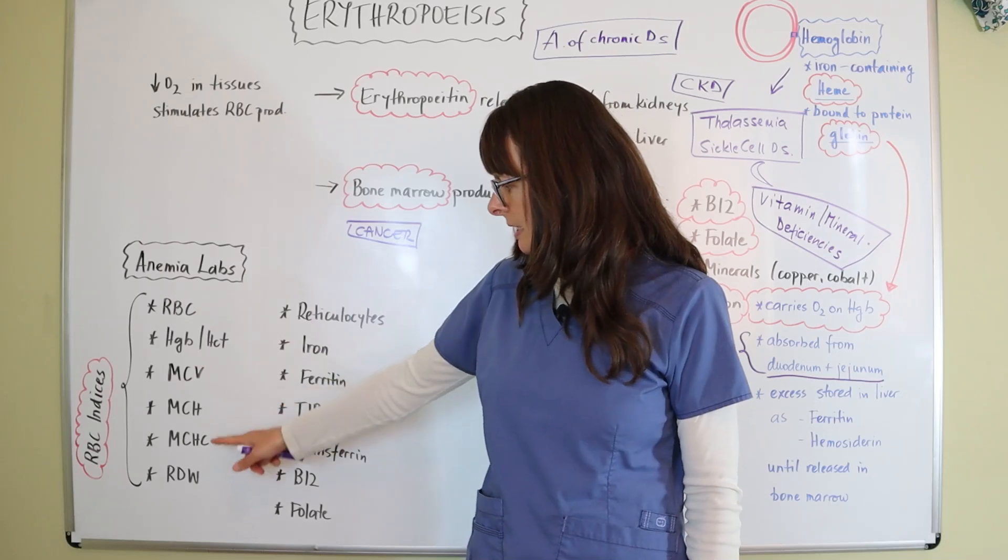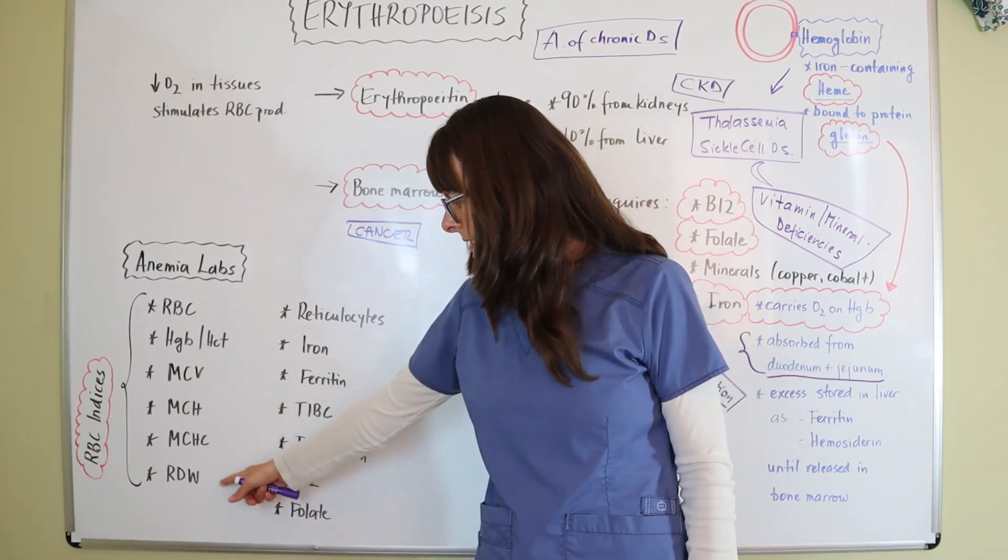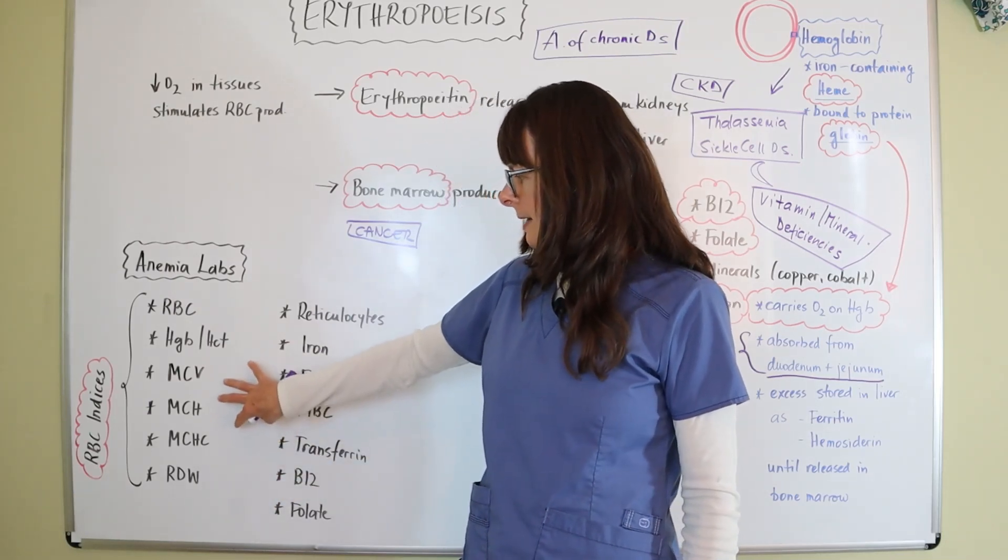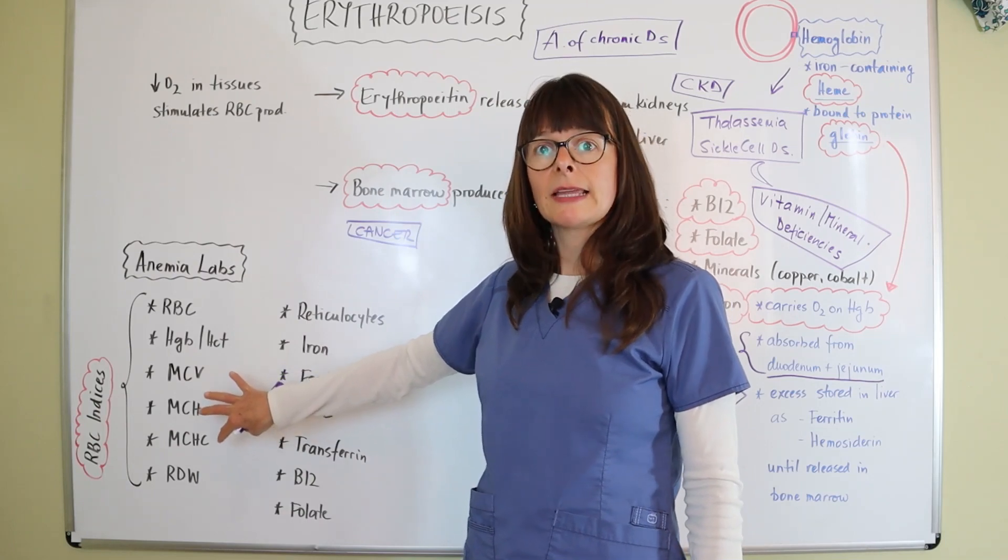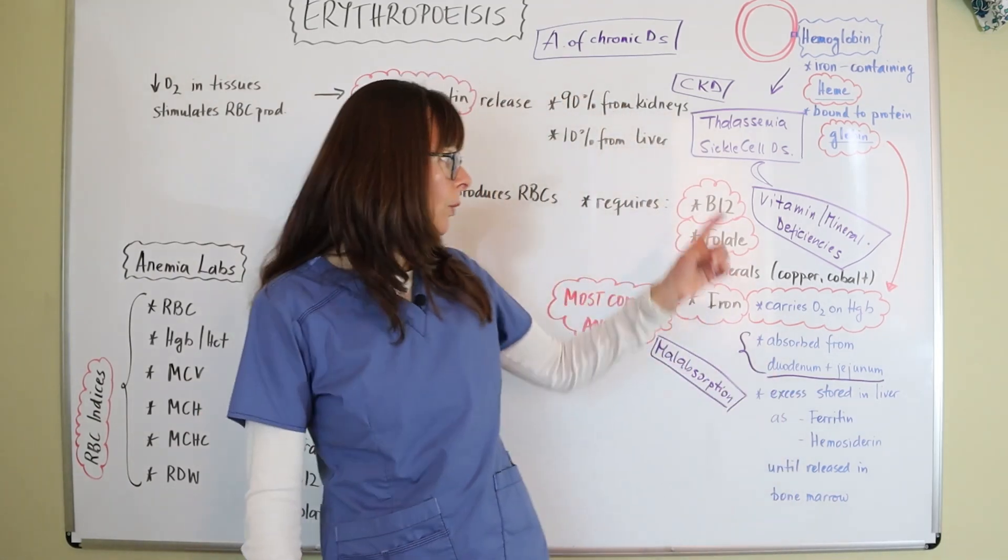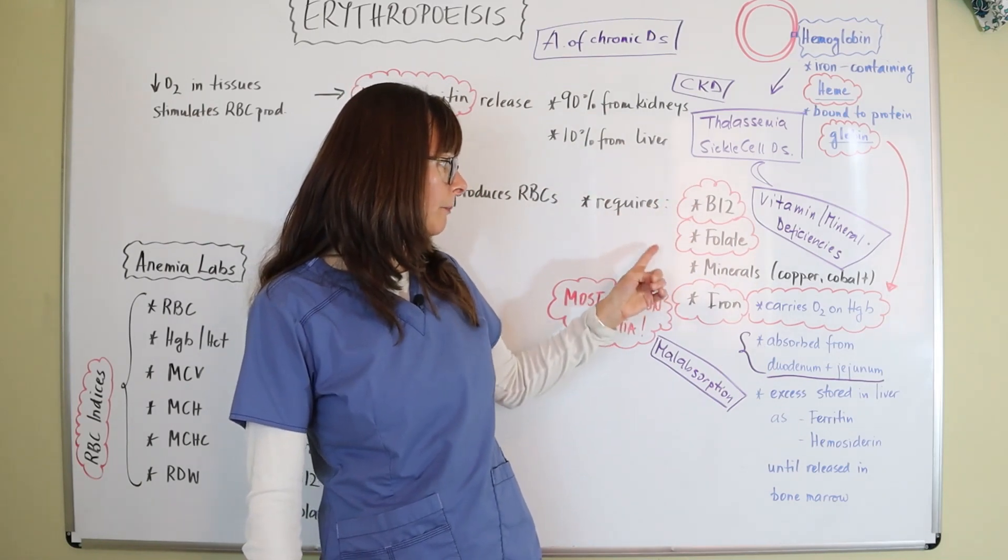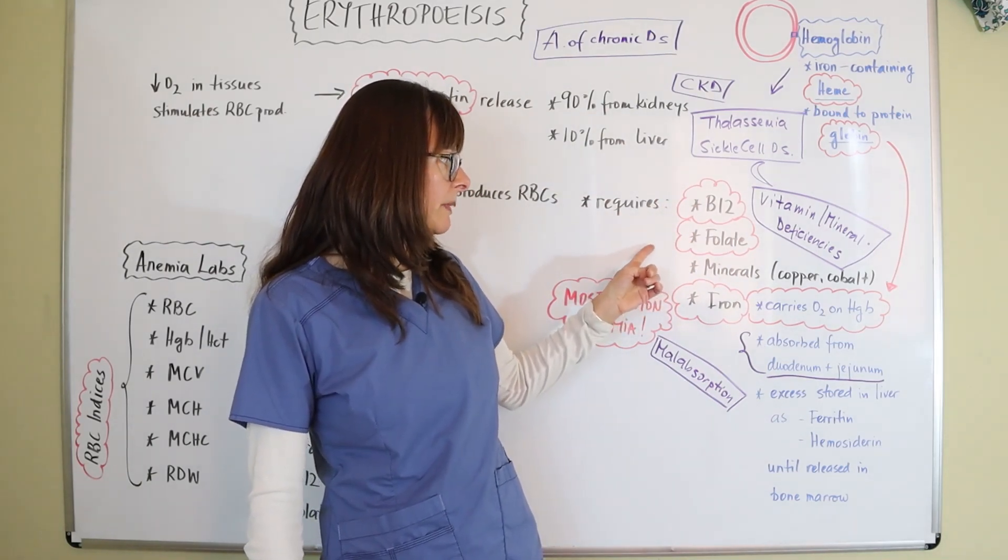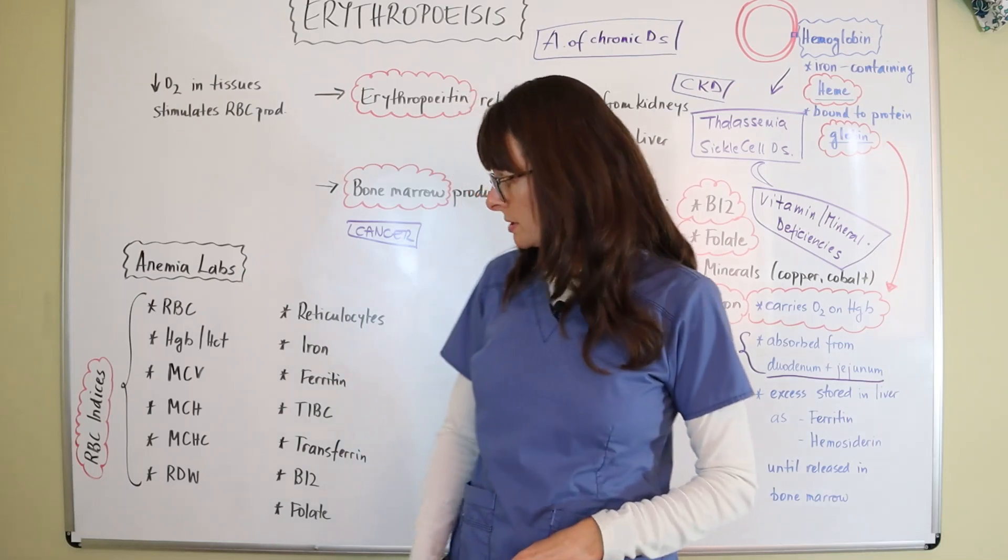MCV, MCH, MCHC and RDW that tell us about the size and the color of the red blood cells. And then we can find out which anemia, these are the mineral and vitamin deficiency anemias that the patient is going to have.